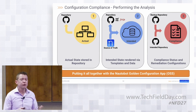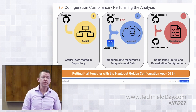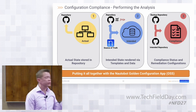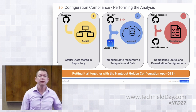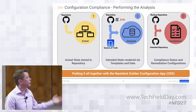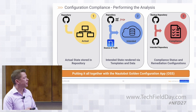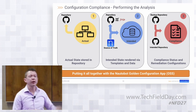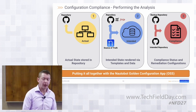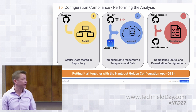For the analysis: we have that actual state stored in our repository and the intended state from our data and templates. We make comparisons of that data and produce the final compliance report. This is the purpose of the Golden Config application.